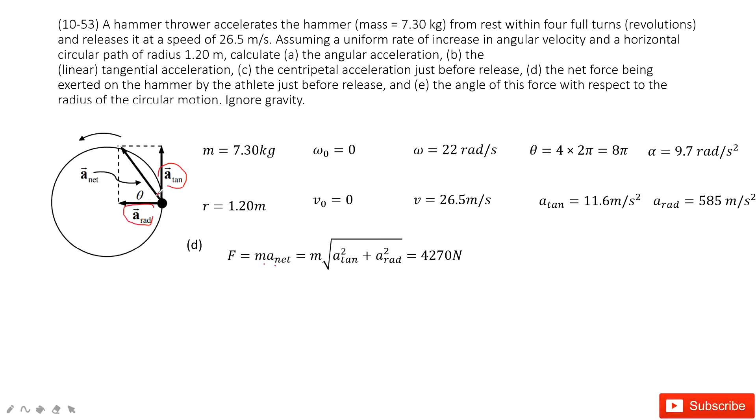These accelerations are vectors. So you can get the net acceleration as this: acceleration linear squared plus acceleration centripetal squared, square rooted. This net acceleration times mass gives you the net force.